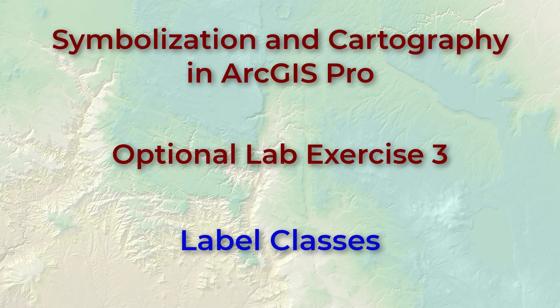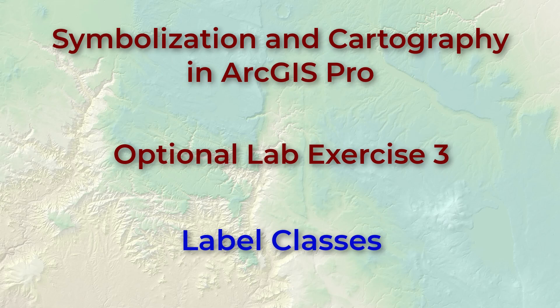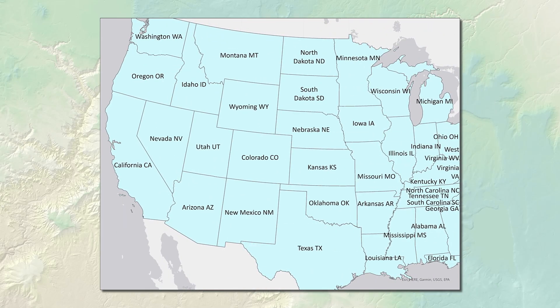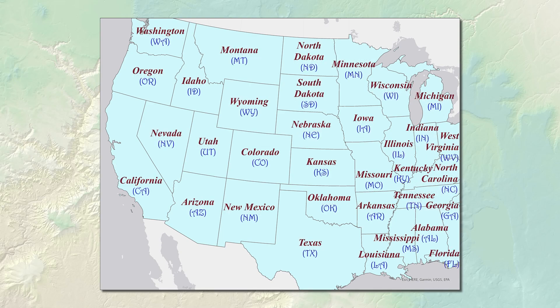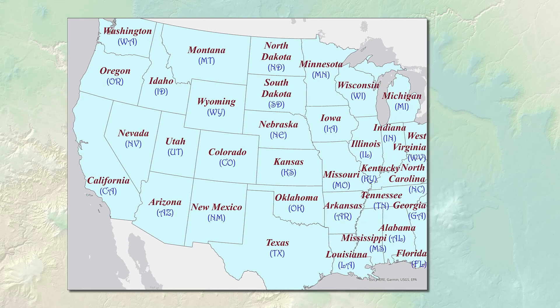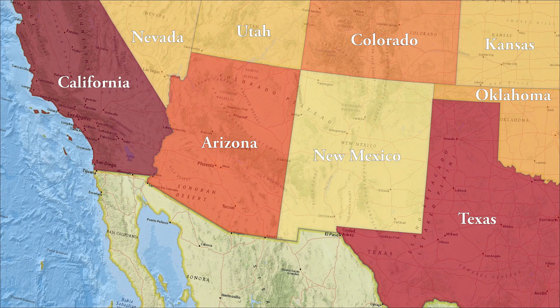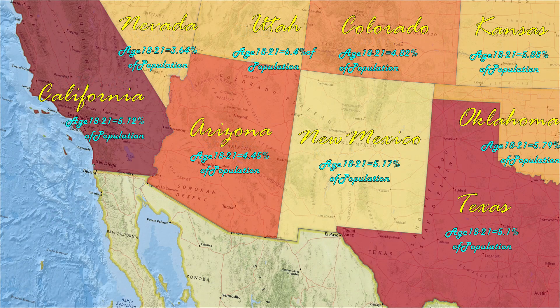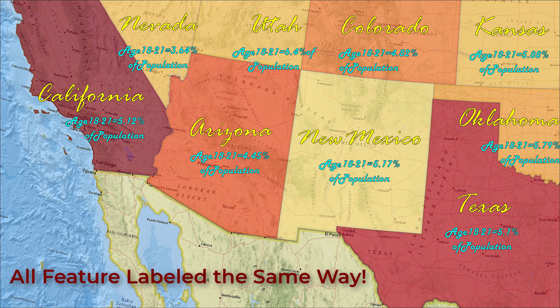Hello everybody, this is Jeff Jeunesse and welcome to our third optional lab exercise as we review ways to make our maps more interesting and readable. So far in these optional labs we've been looking at how we can make labels more distinctive by using a variety of formatting styles within a single label, and how to perform mathematical operations in a label so that they report data not originally in the feature class. One downside to these techniques is that any labeling instructions we set up automatically apply to all features.